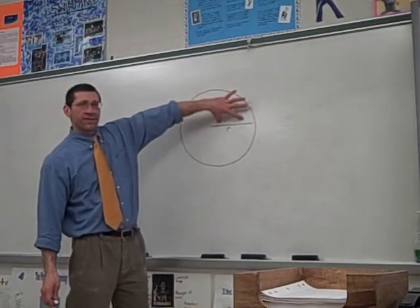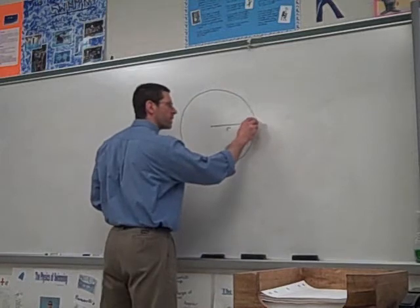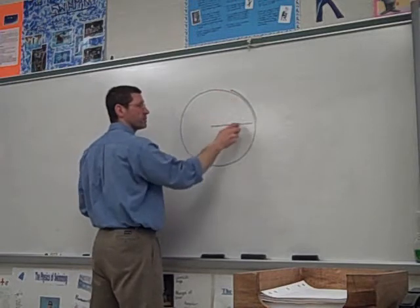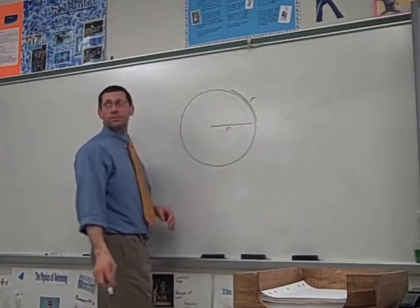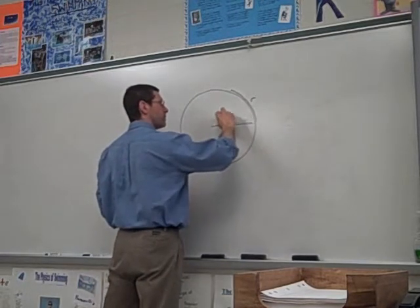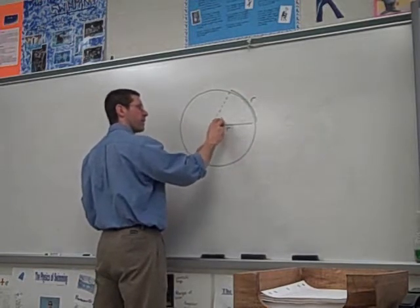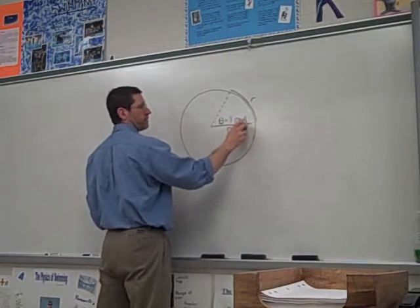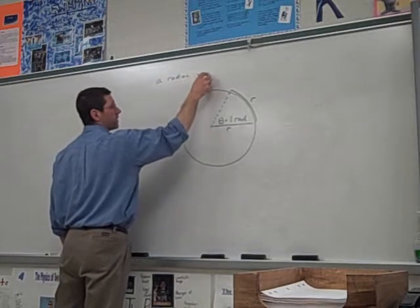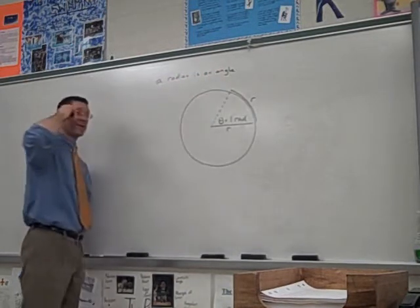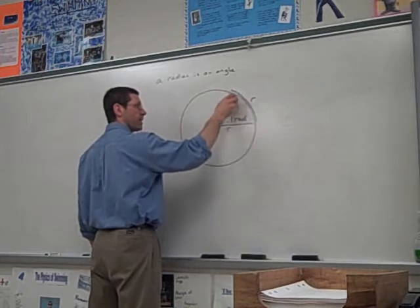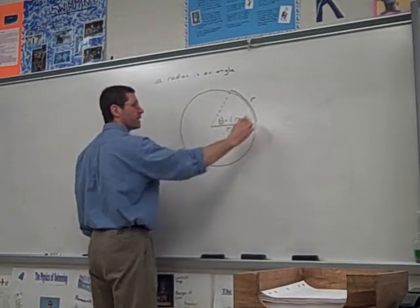Now, if I take that length and I go along the outer edge of the circle, such that the arc length is equal to R. Do you follow what I did? So I took this length and I went that far along the edge of the circle. So the angle I get right here, theta, is equal to 1 radian. So a radian is an angle.